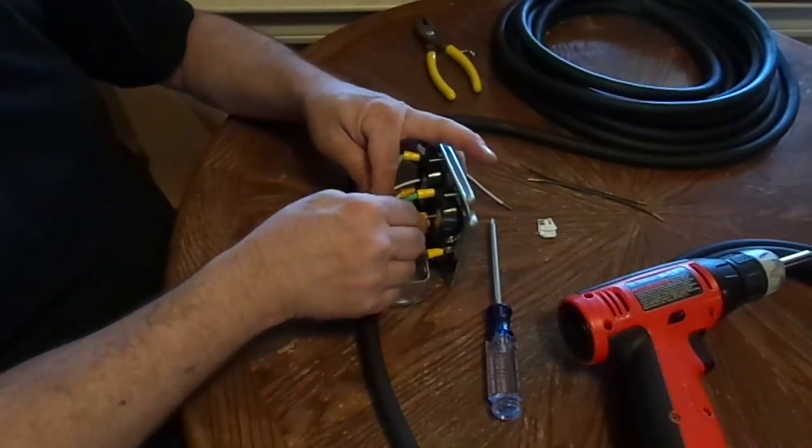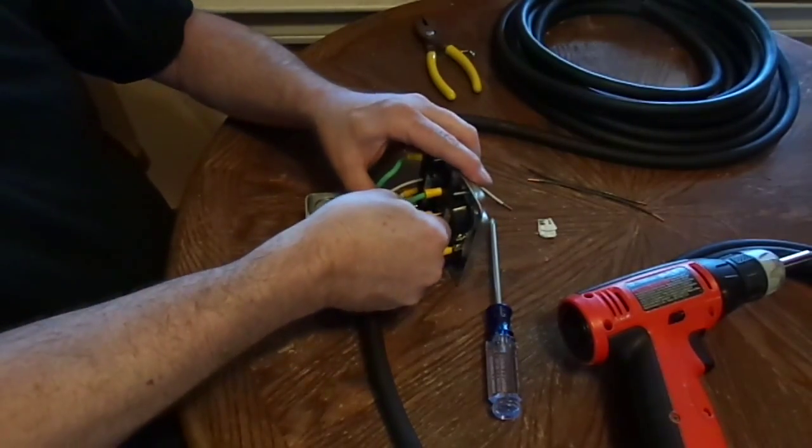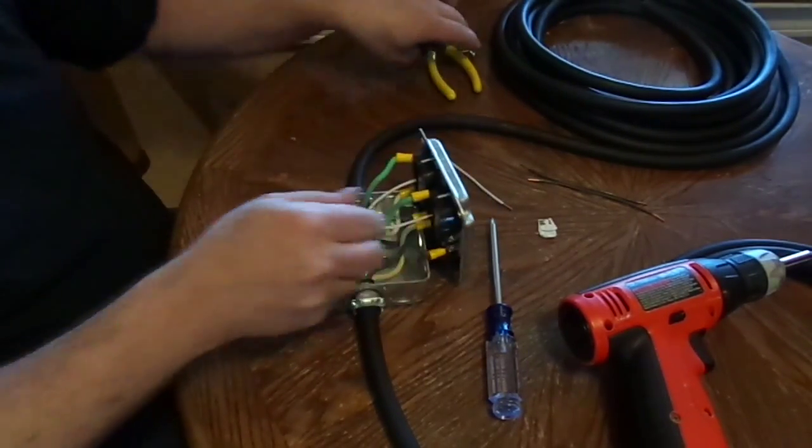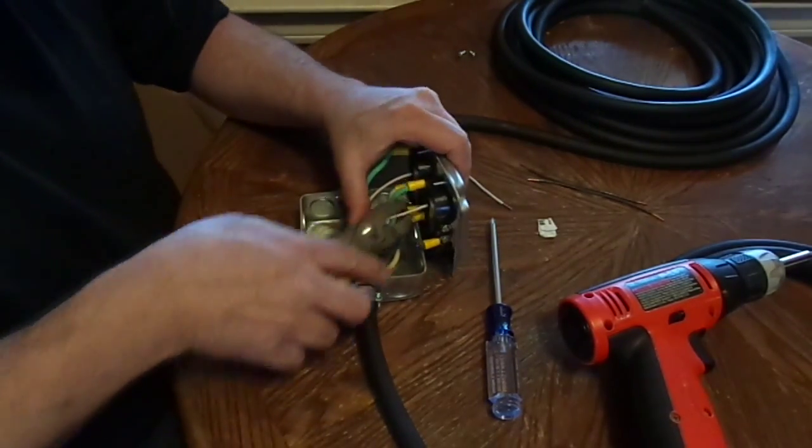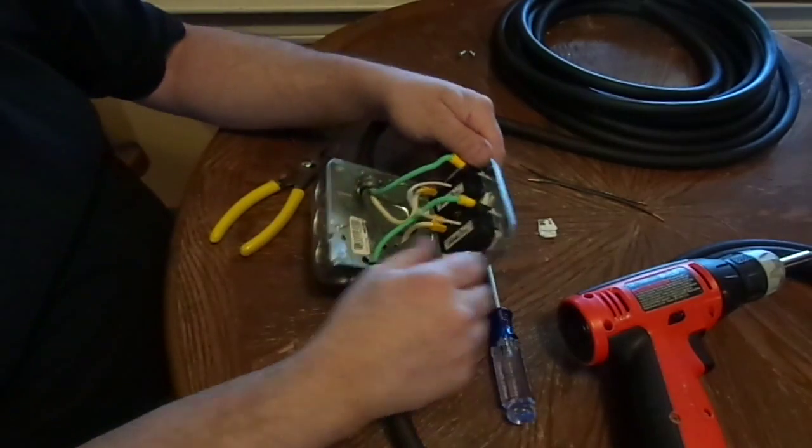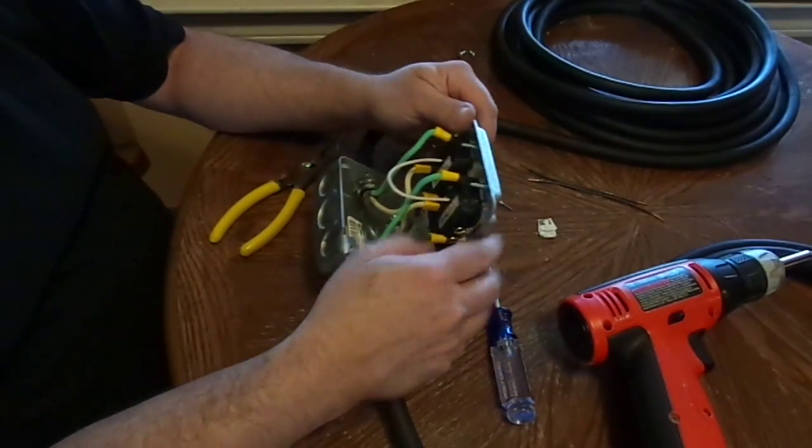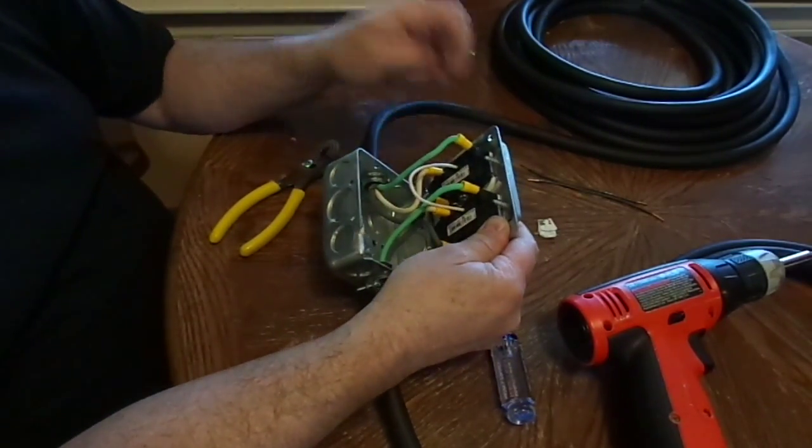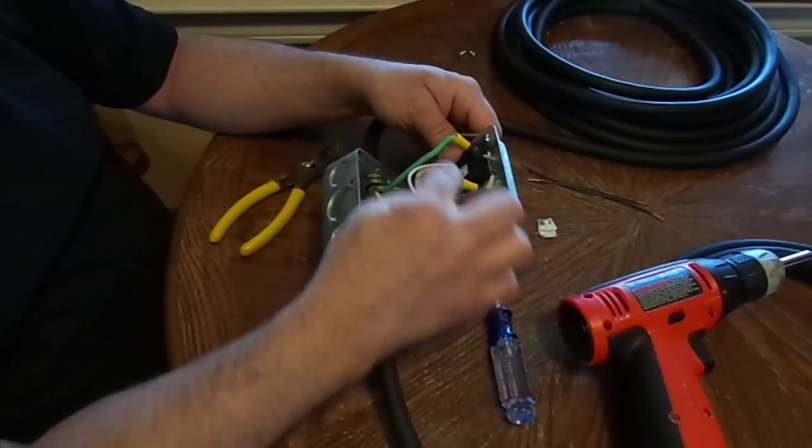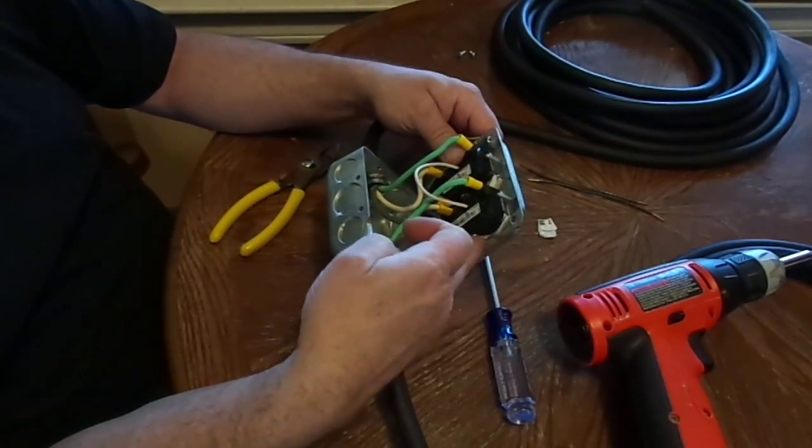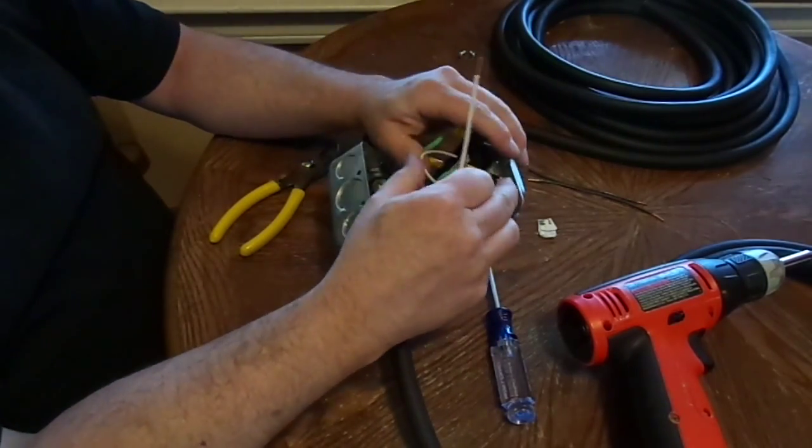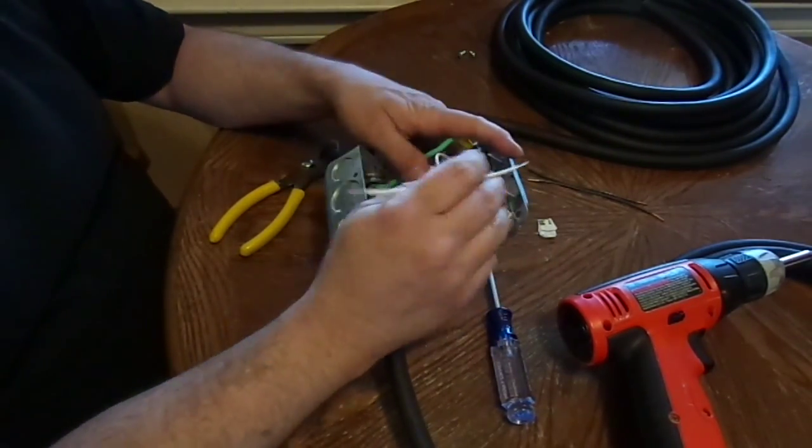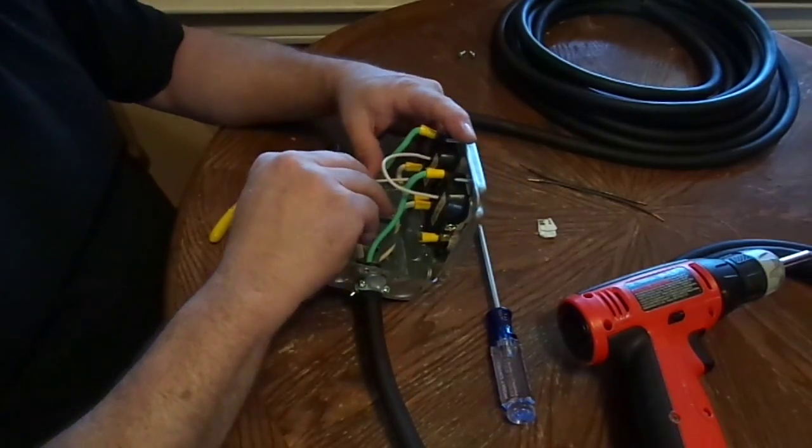And push it right in. Sometimes you need pliers. There we go. Now you also notice there's holes on the bottom. That's in case you actually wanted to split these receptacles up because you can cut this little bridge and make these two individual receptacles. So what we're going to do is actually push the wire in here.